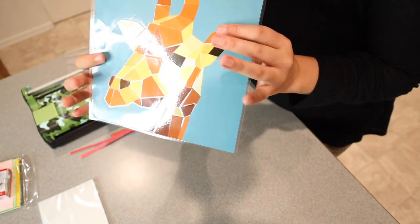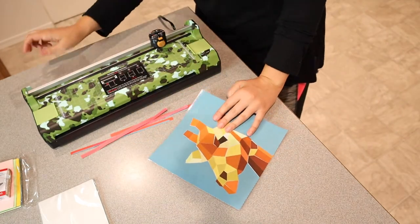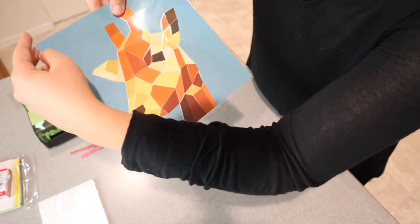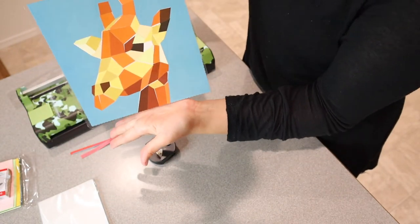So I have all of these edges cut to the size that I'd like. Now I'm just going to use a little edge rounder. Now all of my edges are rounded, so they're not going to poke anybody. And now I have my piece fully laminated.